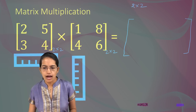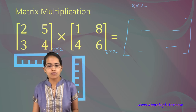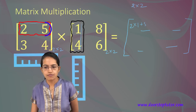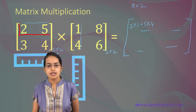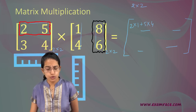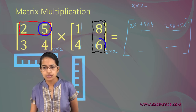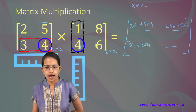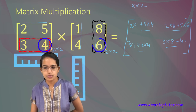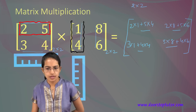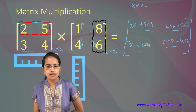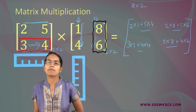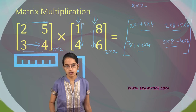For a 2×2 multiplied by a 2×2 matrix, the answer is a 2×2 matrix with 4 elements. The first element is the first row times the first column: 2×1 + 5×4. The second element is the first row times the second column: 2×8 + 5×6. Then 3×1 + 4×4, and 3×8 + 4×6. Each row is multiplied by each column to give the resultant values.